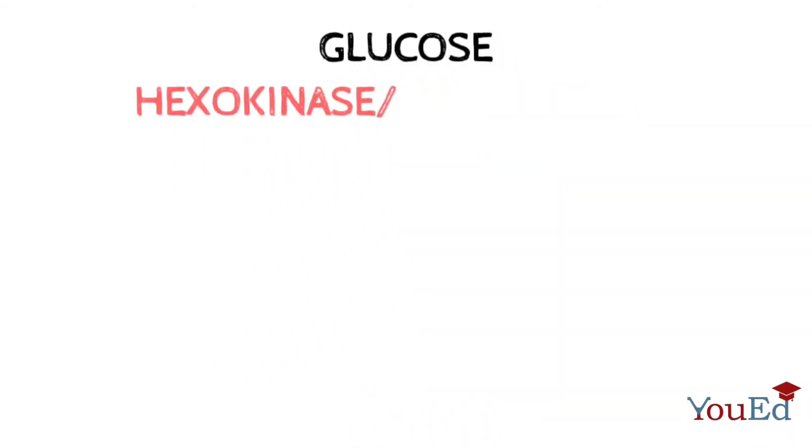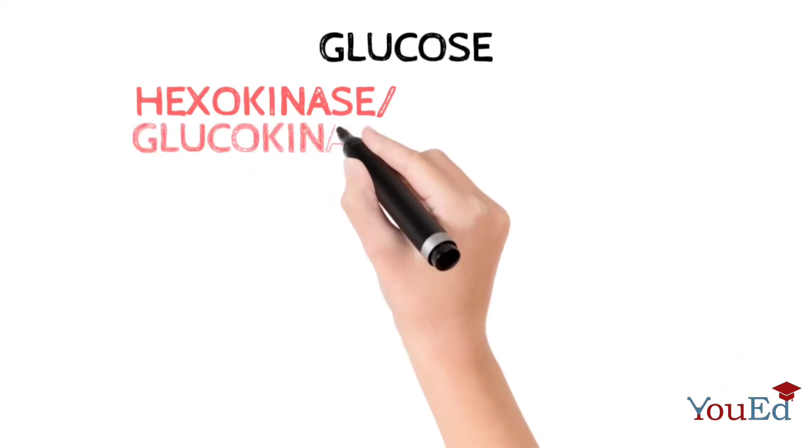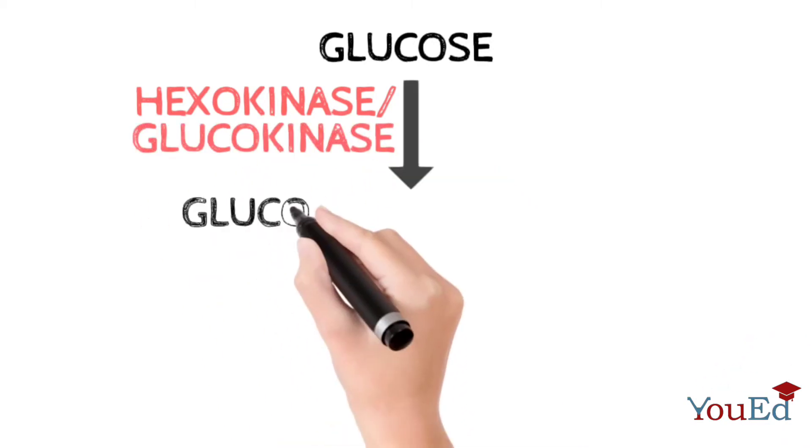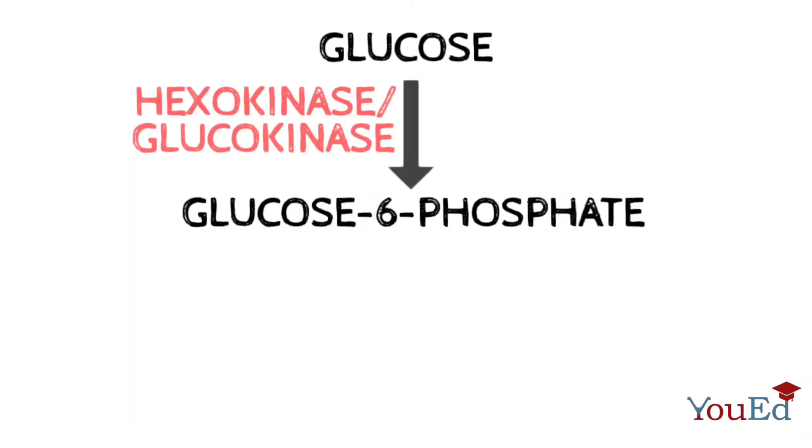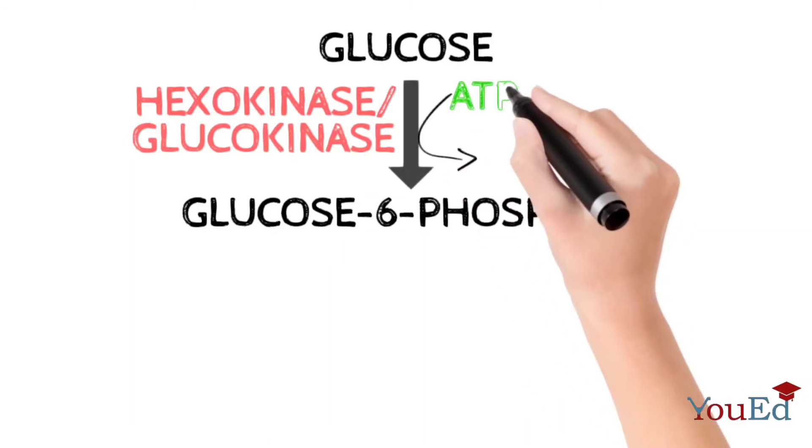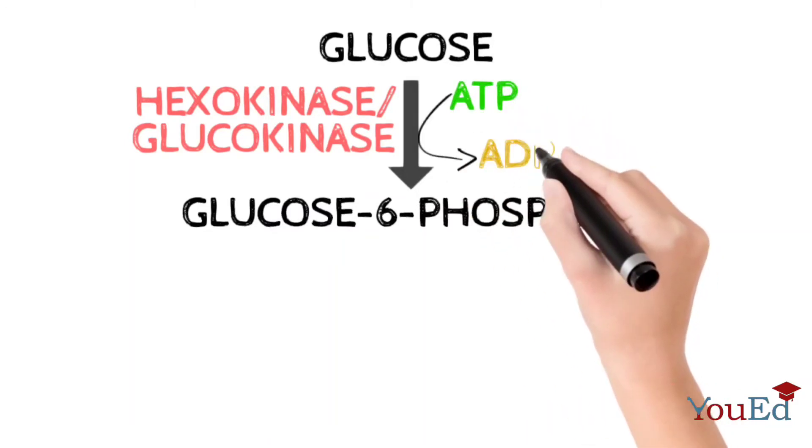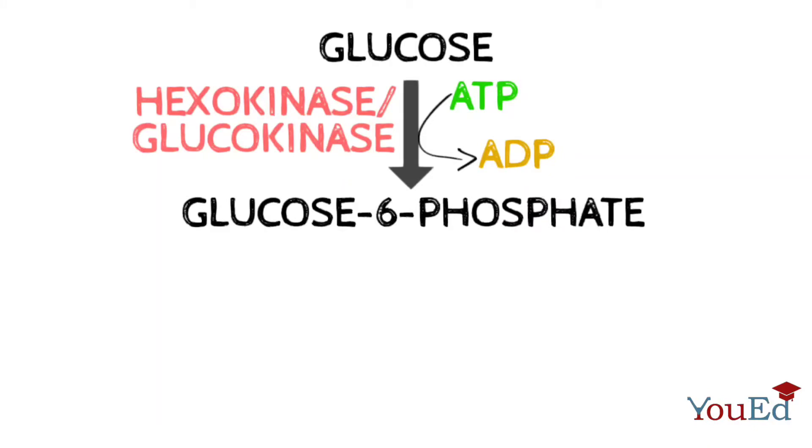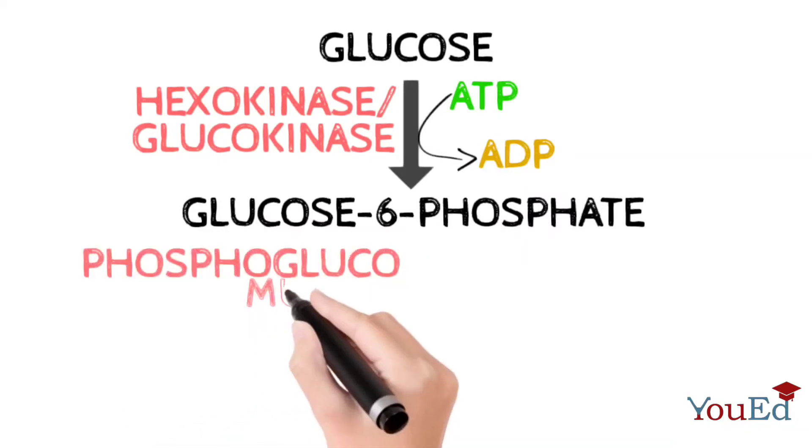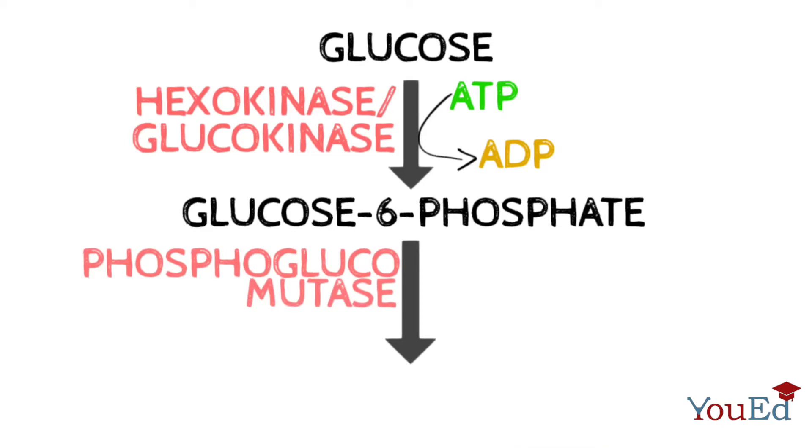First of all, glucose in the presence of glucokinase or hexokinase is converted into glucose-6-phosphate, and this step utilizes ATP molecule. A point to be noted here is that glucokinase is present in the liver and in the muscle hexokinase is the enzyme. An enzyme phosphoglucomutase then acts on glucose-6-phosphate and converts it into glucose-1-phosphate.